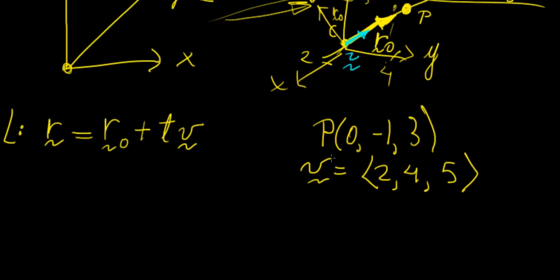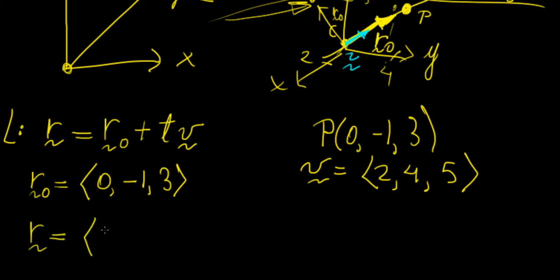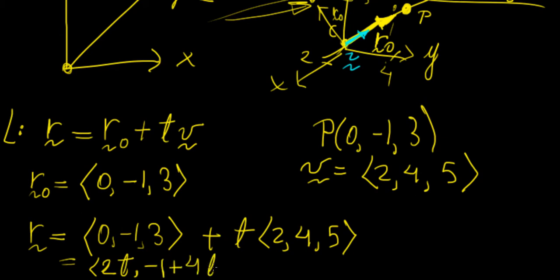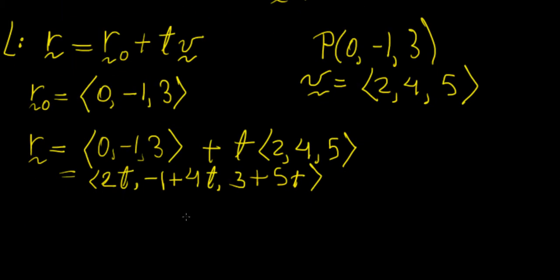All we need to do now is create a vector for P, so R naught goes from the origin to this coordinate, which is just (0, -1, 3). Our vector V is already given, so the parametric equation of the line is: (0, -1, 3) plus t times (2, 4, 5). When you multiply a scalar by a vector you multiply every component by that scalar, so this comes out to be (2t, -1 + 4t, 3 + 5t). Our equation for the line is a parametric equation in terms of parameter t.